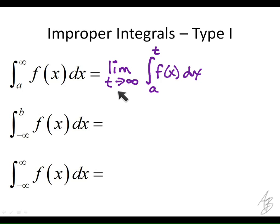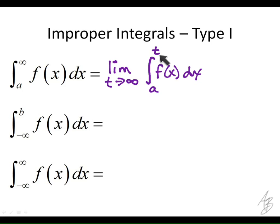This approach allows us to evaluate the integral part first: we find the antiderivative, evaluate it at t, subtract the evaluation at a, and then take the limit as t approaches infinity. So it allows us to work with infinity indirectly — we evaluate the definite integral first, and then take the limit of that result.